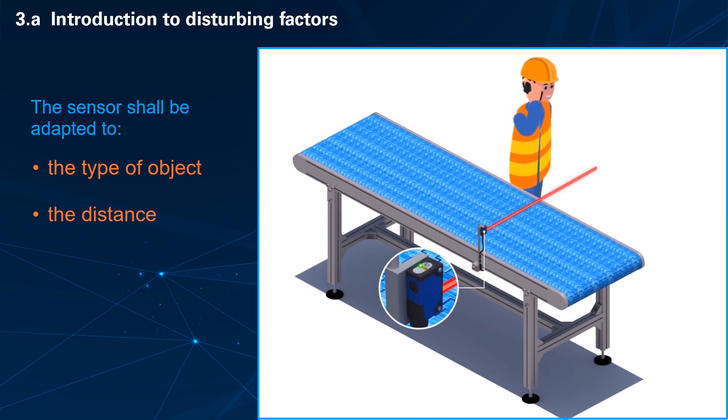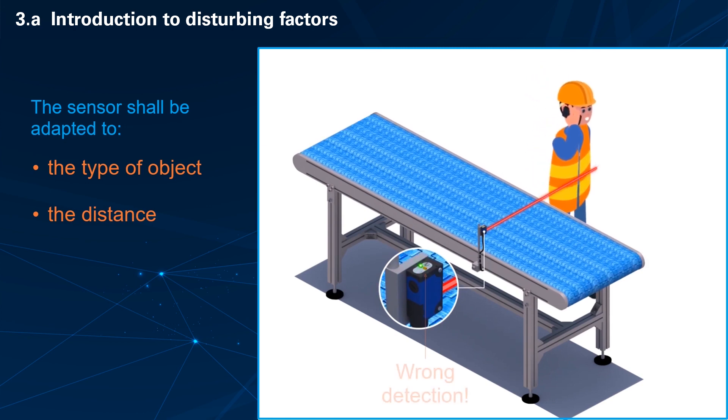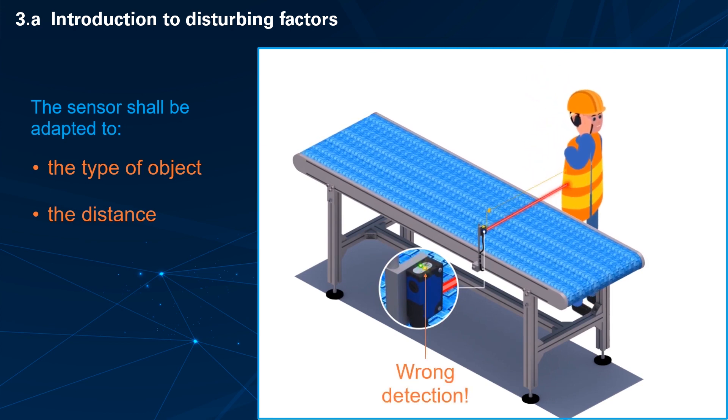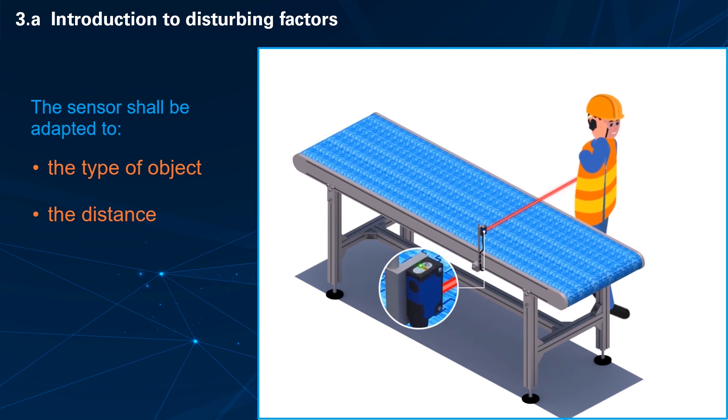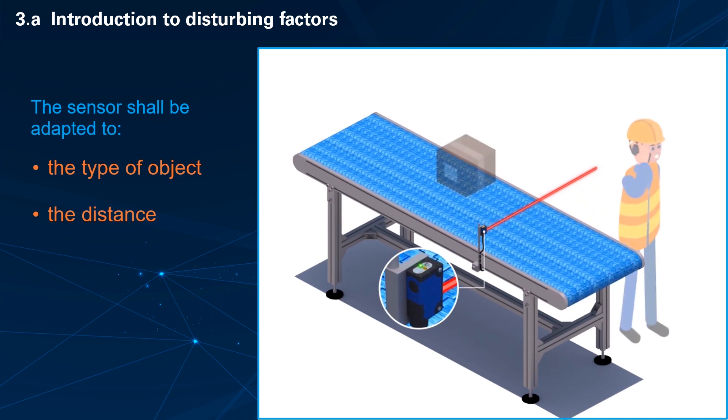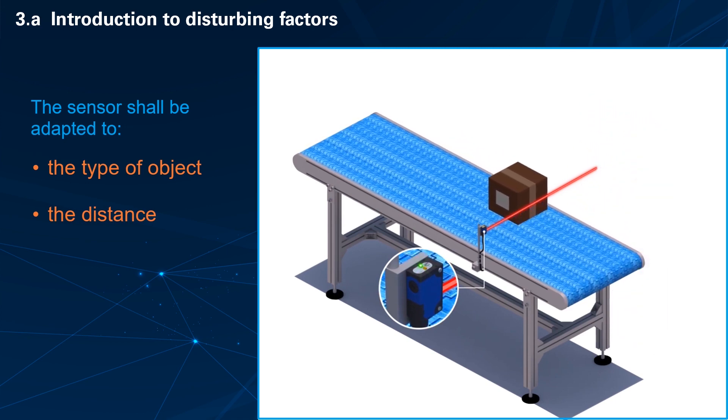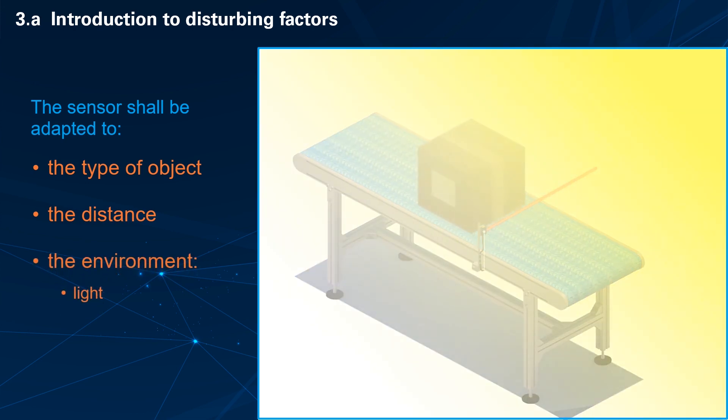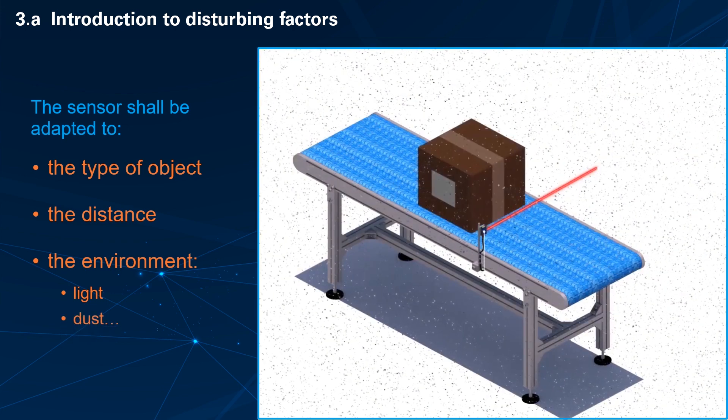But in this case, other objects outside the conveyors should not be detected. Not to mention that the photoelectric sensor shall be adapted to its environment. The environment light, for instance. Or the presence of dust.